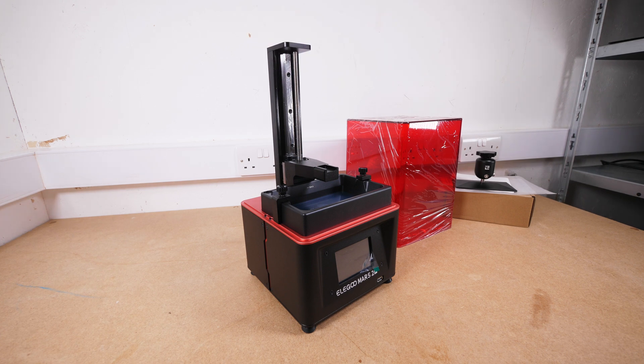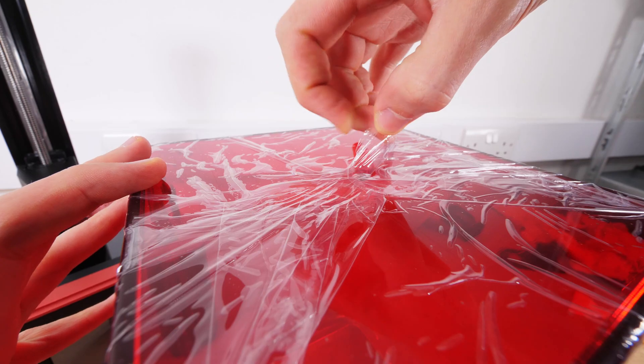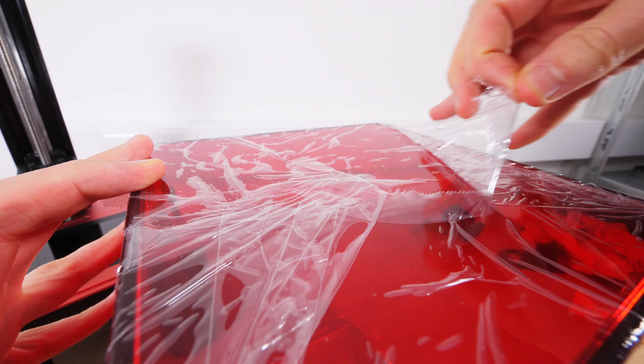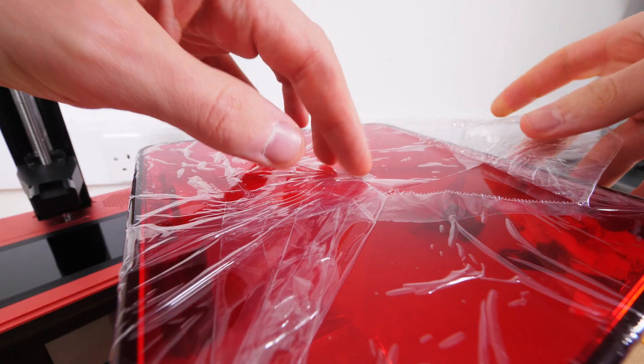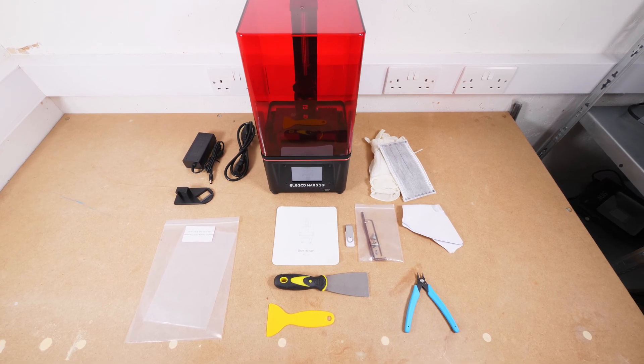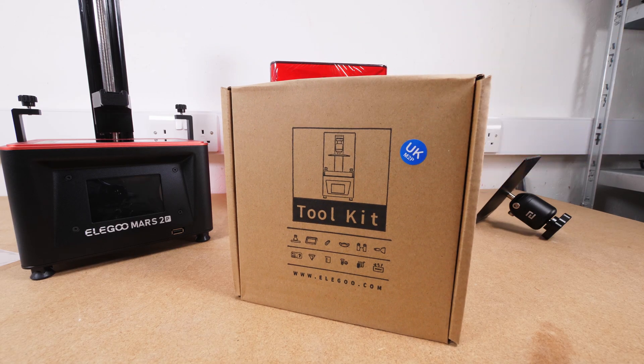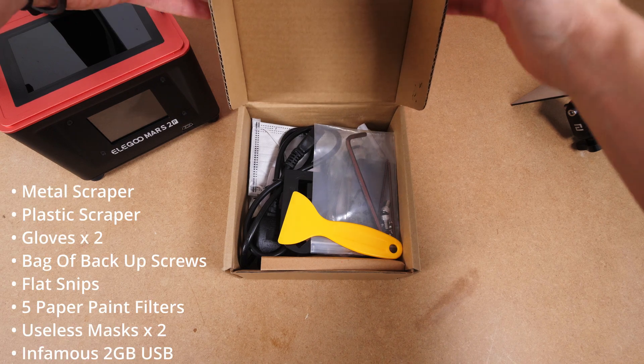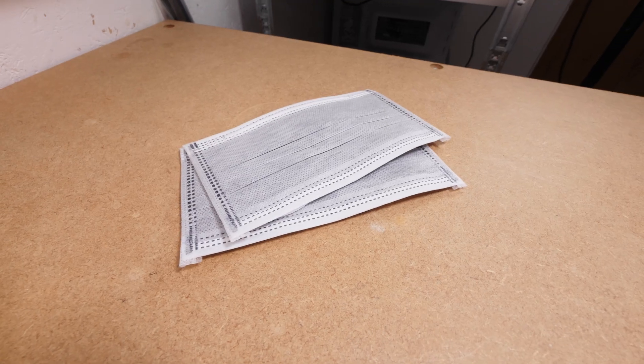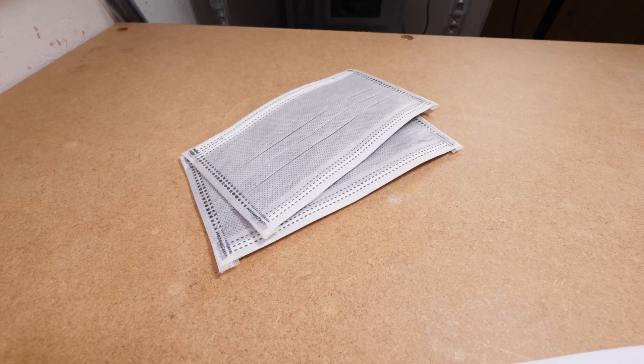As you've seen, the printer comes perfectly packaged and I would be surprised if it ever arrived damaged. Included comes everything you would expect - the printer, power cable, etc. Plus, you get this lovely little handy dandy starter toolkit. Most of what's in it is pretty useful, except for the mask, which is utterly useless when it comes to resin safety.